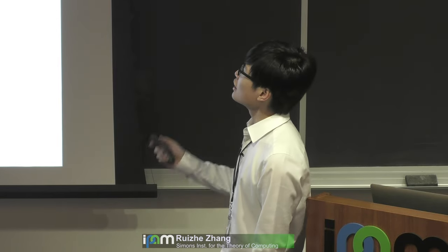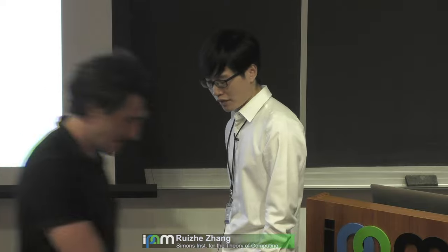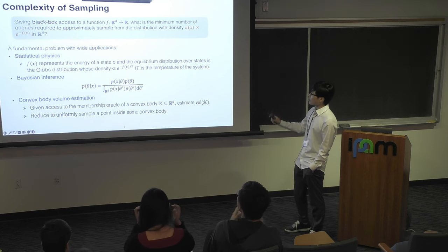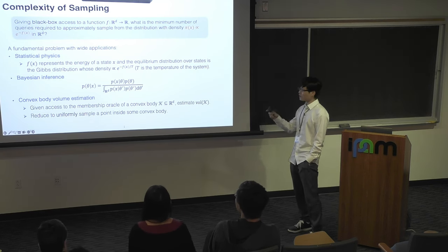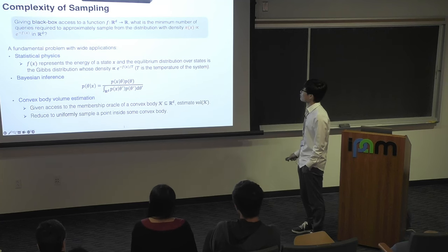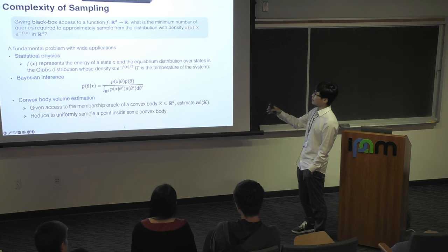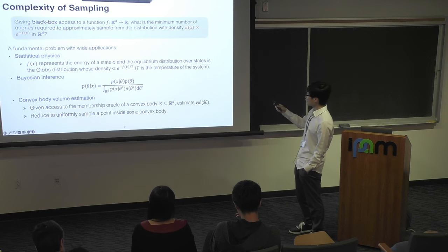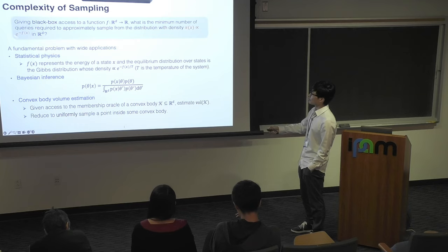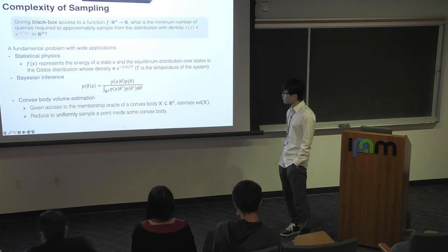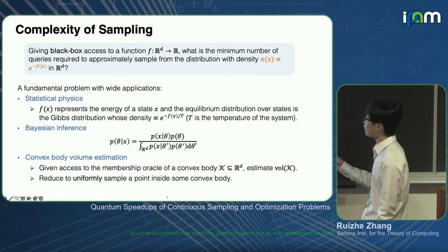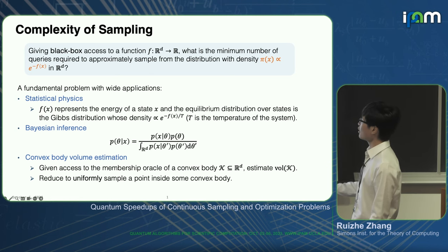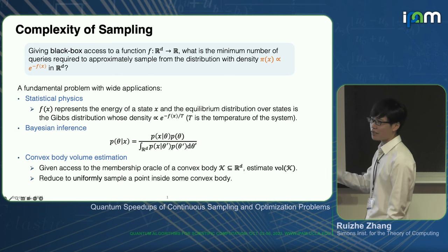Let's get started from the definition of the complexity of sampling. We are given black box access to some function f from R^d to R. It's a d-dimensional function, and we want to know the minimum number of queries to the black box in order to approximately sample from the target distribution defined by the density pi of x proportional to e to the minus f of x. This is a very fundamental problem in theoretical computer science with many important applications.